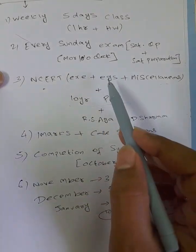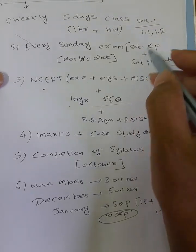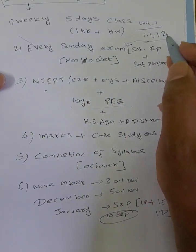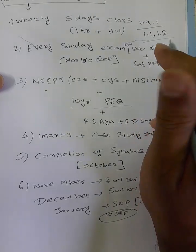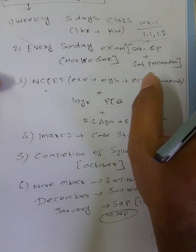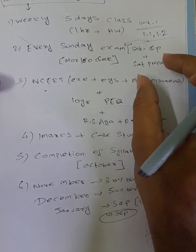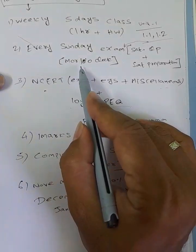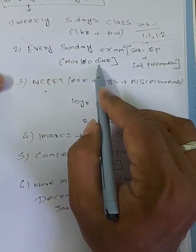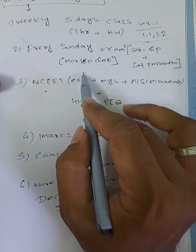Every Sunday exams. For example, unit 1 — I will complete exam 1.1 and 1.2. In the week, 1.1 and 1.2 related questions: textbook questions and public exam questions. The same questions should be on the exam. If you have doubts in the next class, you can clear your doubts in the next class.